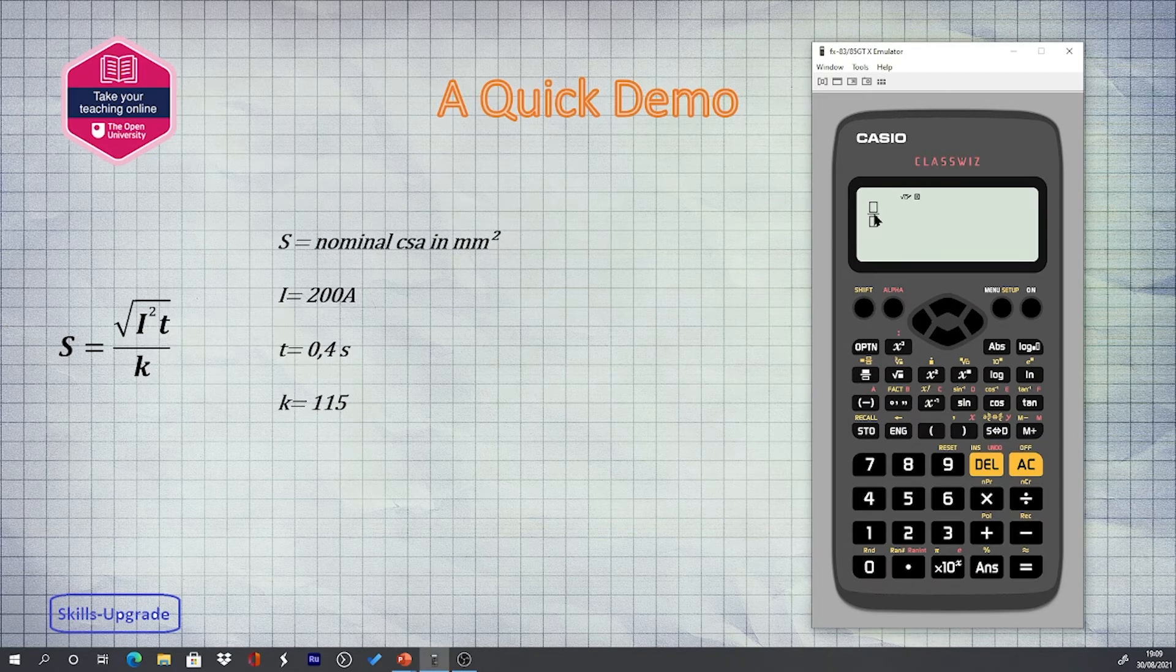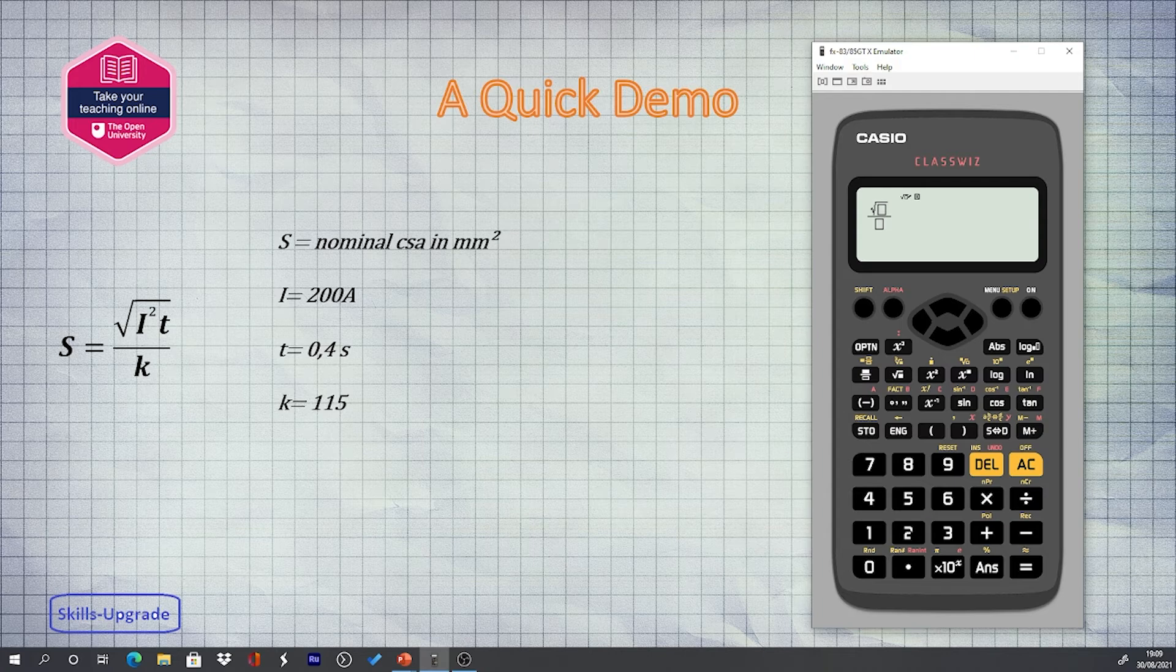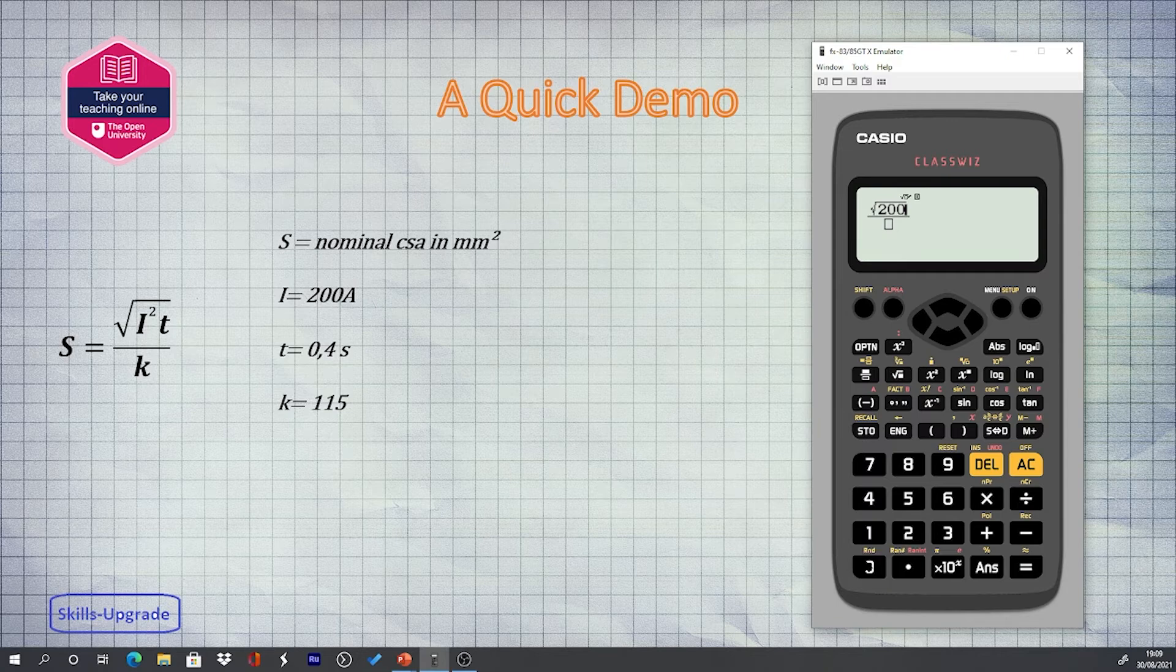Using the fraction function we display two boxes. The square root of the product of i squared multiplied by t is entered as shown.